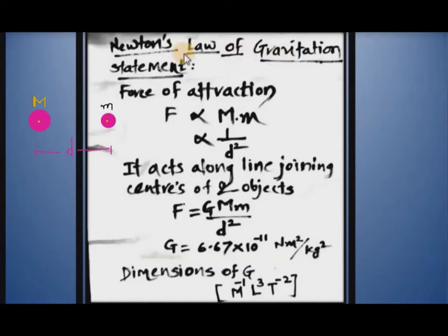Newton's law of gravitation states that the force of attraction between two objects is directly proportional to the product of their masses and inversely proportional to the square of distance between them.